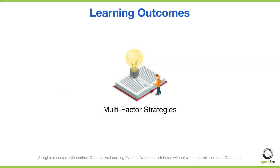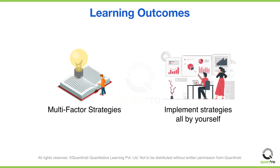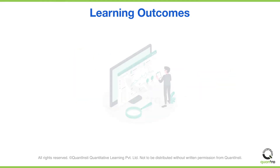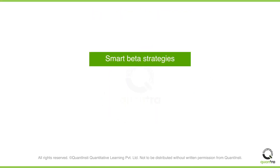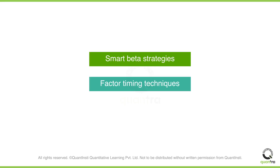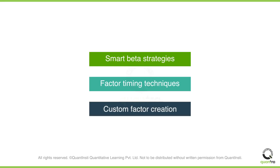The main focus of the course is to not just take you through the concepts of multi-factor strategies, but also to help you gain the ability to select a factor of your choice and implement strategies taught in this course all by yourself. After completing this course, you will also be able to blend multiple factors to create portfolios with improved risk-adjusted returns. Finally, you will also be able to look at advanced concepts such as smart beta strategies, factor timing techniques, and custom factor creation.